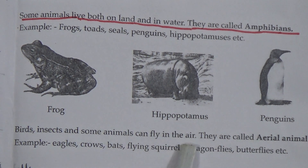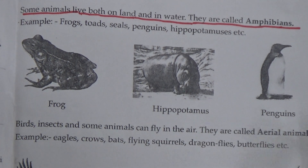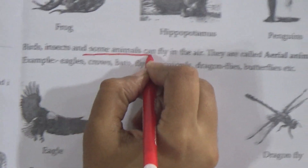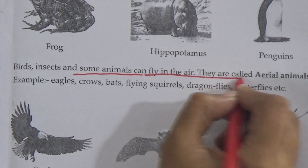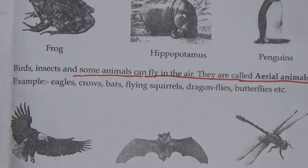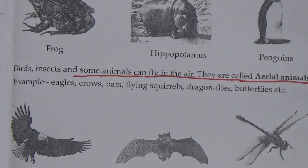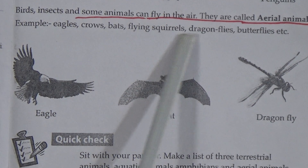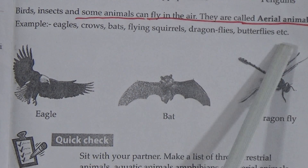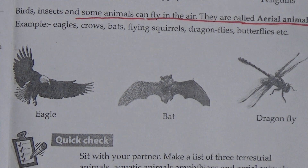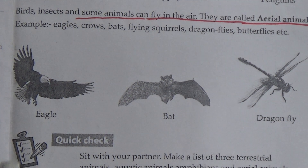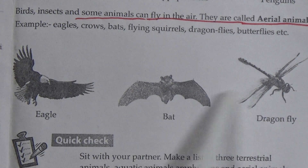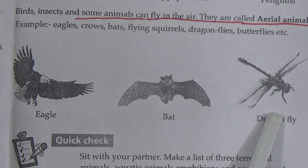Now, birds, insects, and some other animals can fly in the air — they are called aerial animals. The examples are eagle, crows, bats, flying squirrel, dragonflies, butterflies, etc. Now we will see this picture: this is eagle, bat, dragonfly — all are aerial animals.